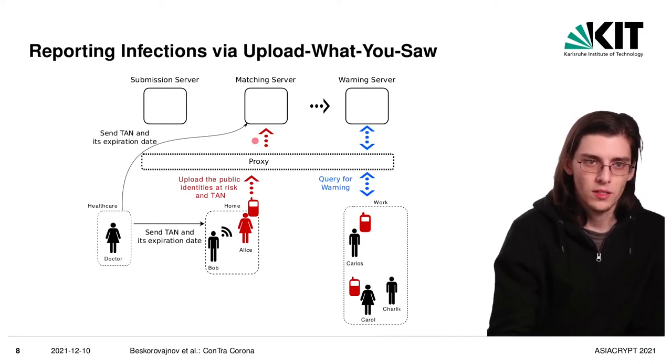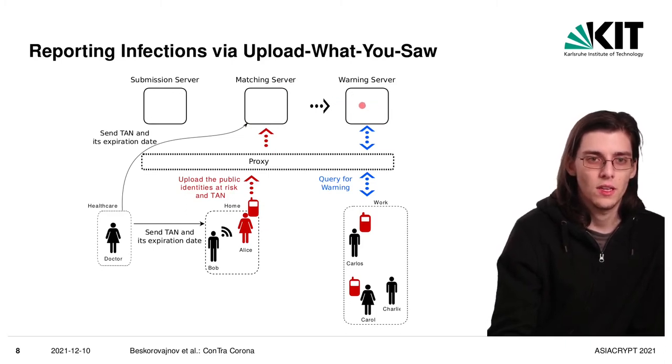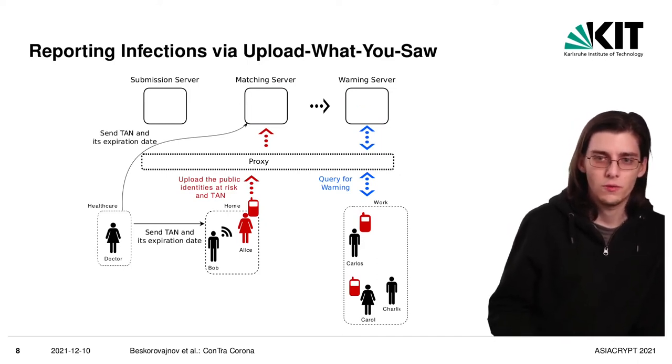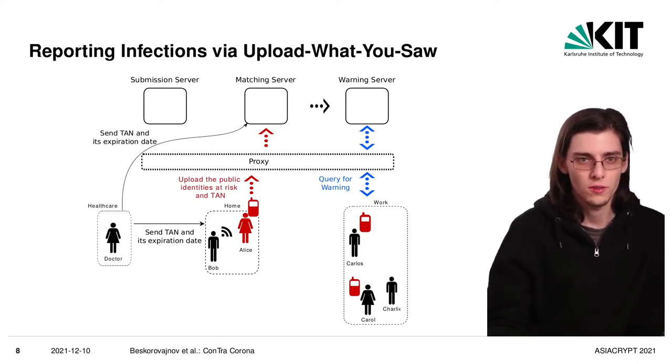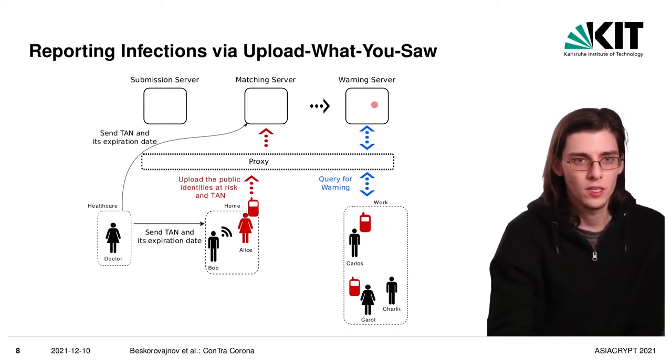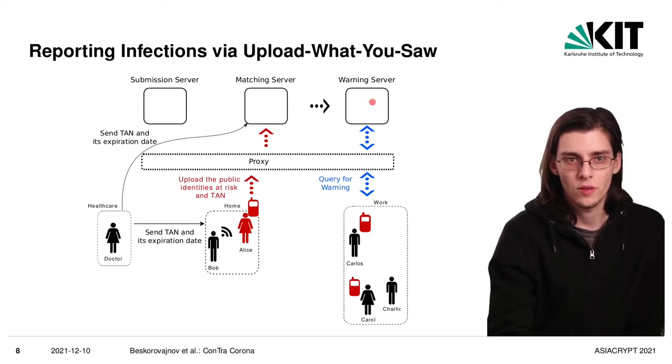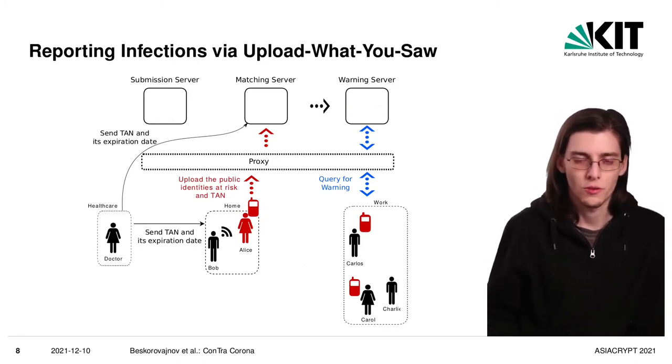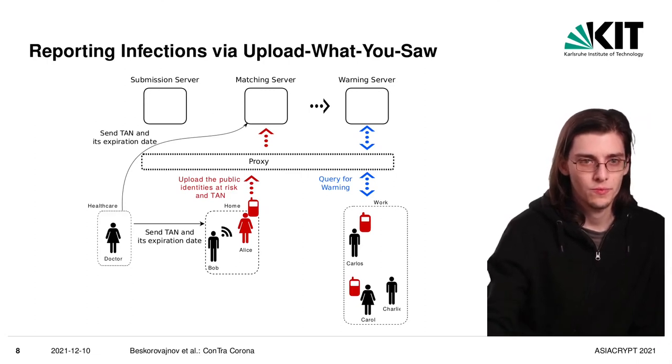These uploaded identifiers are then translated by the matching and the warning server into warning identifiers. And then there will be one warning identifier per person and day for each person that should be warned. So even if you are warned by two people, in the end on the warning server, there will be only one warning identifier for you and you cannot tell how many people have warned you, thereby protecting their privacy.